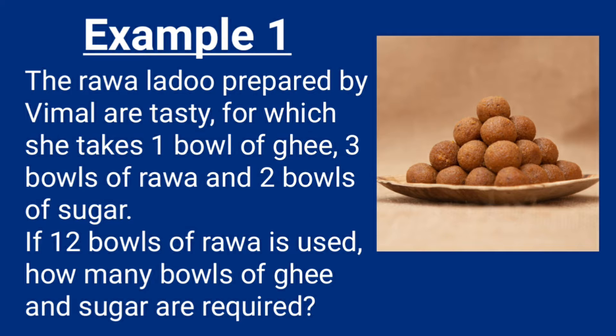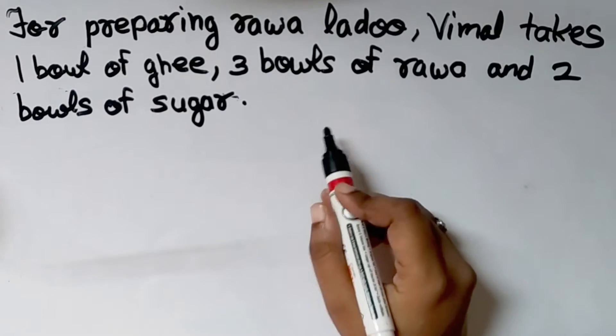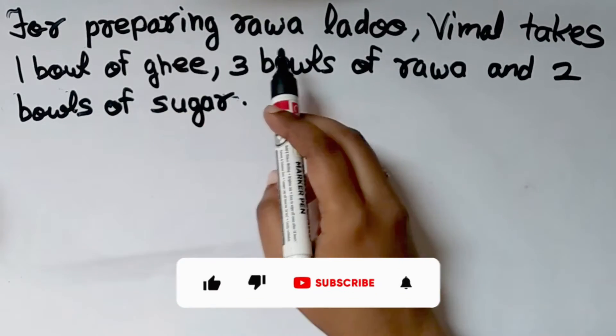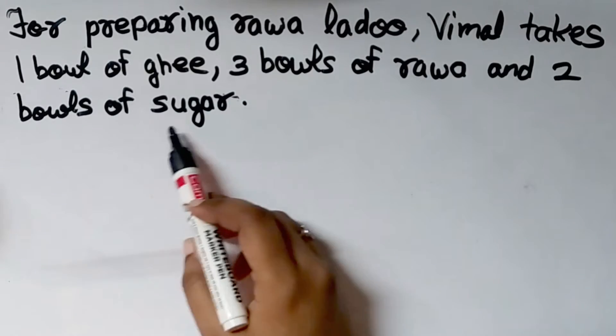Now we will see Example 1. The rava laddu prepared by Vimal are tasty. Rava laddu is a sweet dish and in cooking the ratio and proportion of the ingredients is very important. The question is: for preparing rava laddu, Vimal takes 1 bowl of ghee, 3 bowls of rava, and 2 bowls of sugar. If 12 bowls of rava is used, how many bowls of ghee and sugar are required?